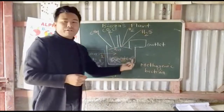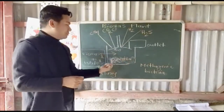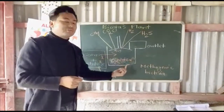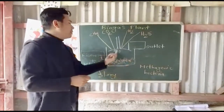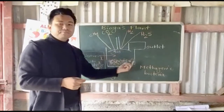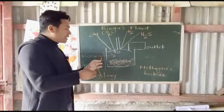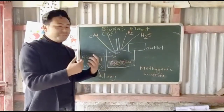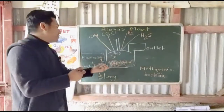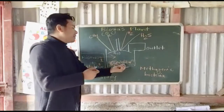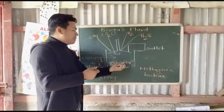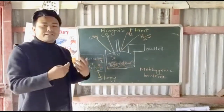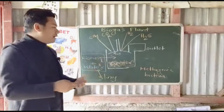Since there is no oxygen in the closed chamber, the process is called anaerobic oxidation. In the absence of oxygen, microorganisms become very active and break down the biomass into simpler forms.